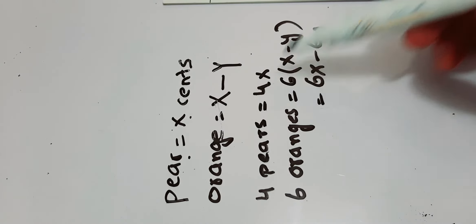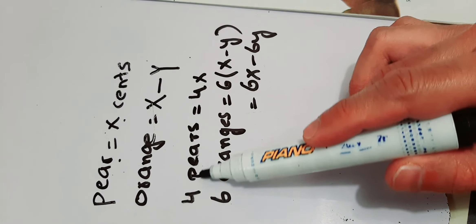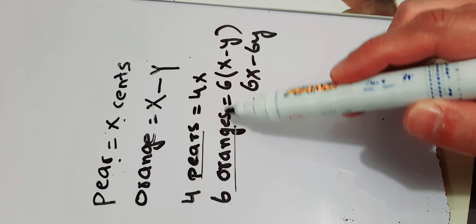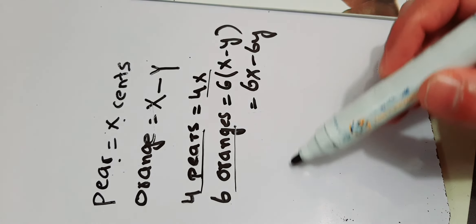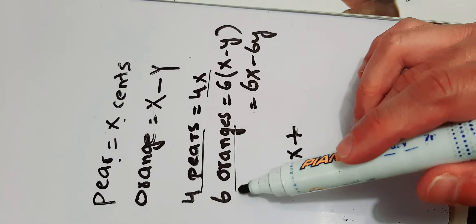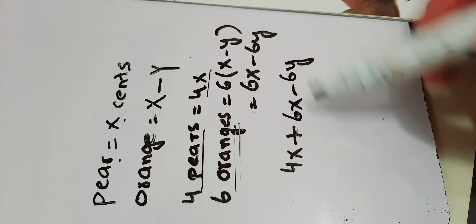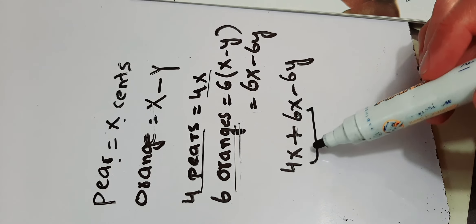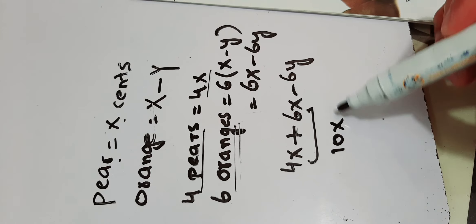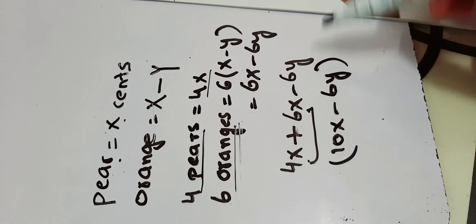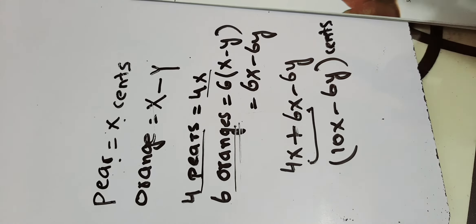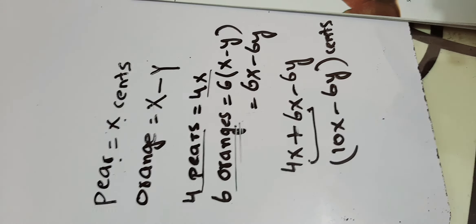This is the cost of half a dozen oranges and this is the cost of 4 pears. The total cost will be adding the cost of 4 pears and 6 oranges: 4x plus 6x minus 6y. This is the total cost of 4 pears and 6 oranges.